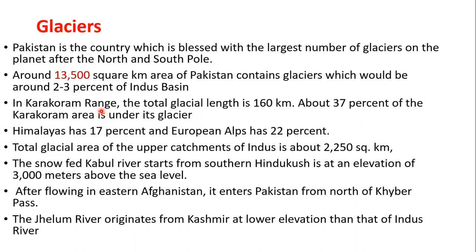The Karakoram Range is one of the highest mountain ranges in the world. The glacier length in these areas is 160 kilometers, and approximately 37% of the Karakoram area is under glacier. For comparison, the Himalayas have 17% glacier coverage and the European Alps have 22%.